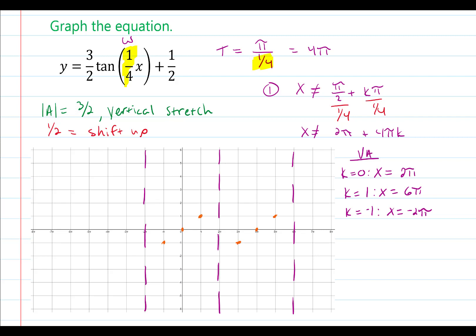Now I'm going to apply the vertical stretch by a factor of three halves. This means I'm going to multiply all my y coordinates by three halves. So for the very first point, I would have negative pi comma negative three halves. The x-intercepts will remain the same, and then I will have pi comma three halves. For the next curve: three pi will be at negative three halves, four pi will still be on the x-axis, and then finally five pi comma three halves.